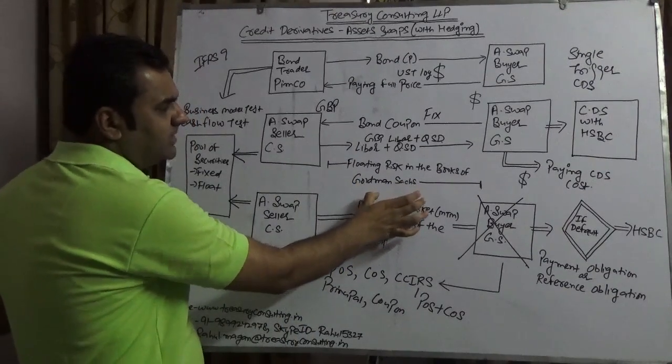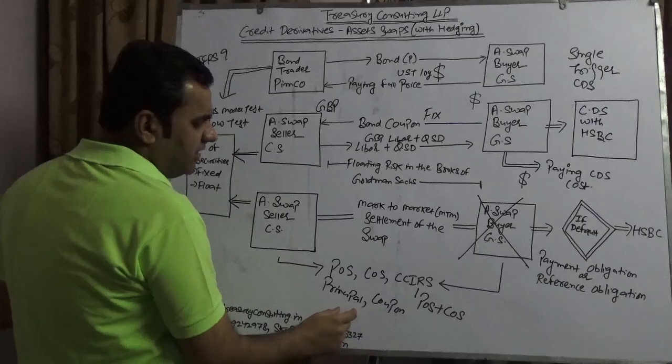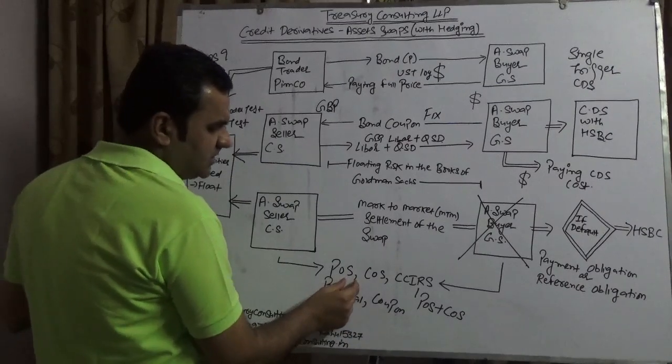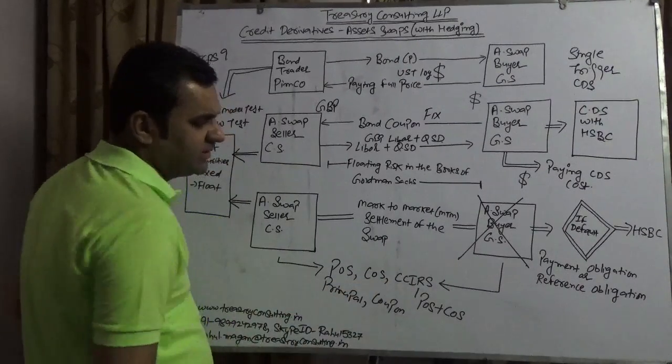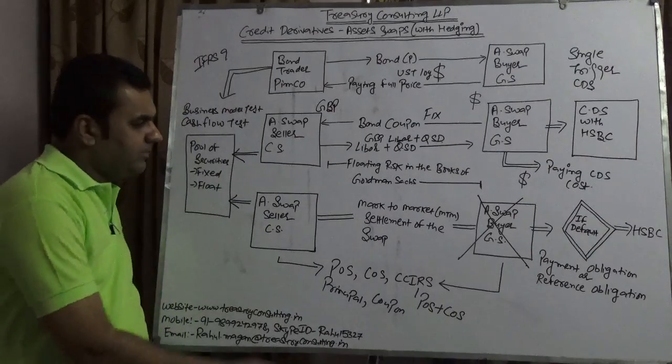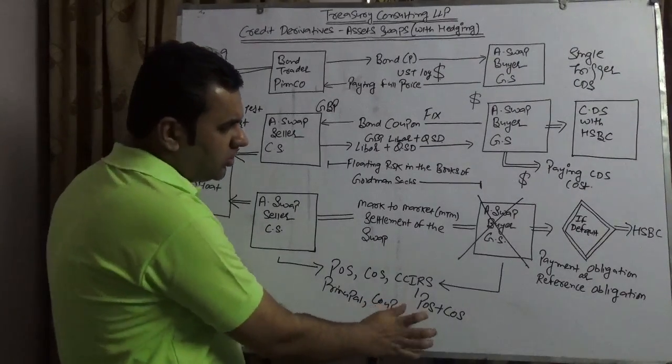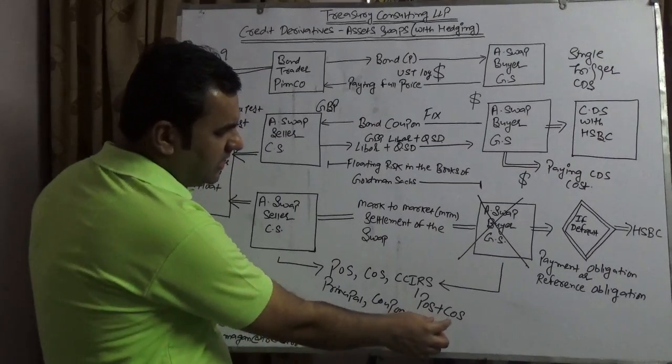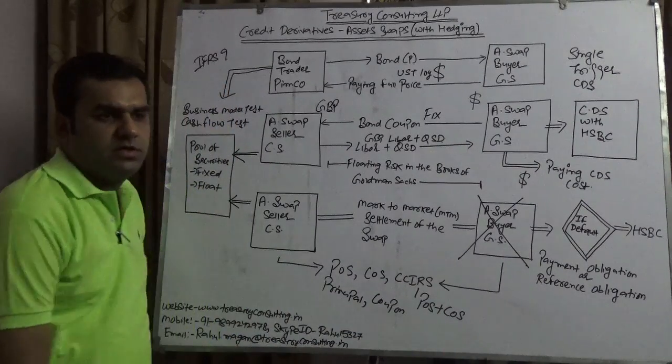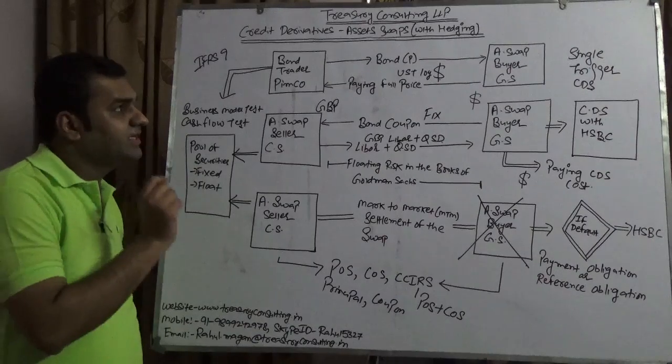The floating risk which Goldman Sachs is paying needs to be covered by either principal only swap, coupon only swap, or cross-currency interest rate swap. Principal only swap covers principal, coupon only swap covers coupon, and cross-currency interest rate swap covers POS plus COS.